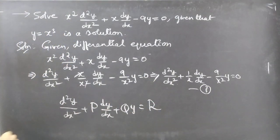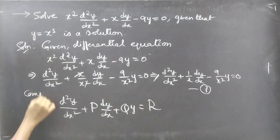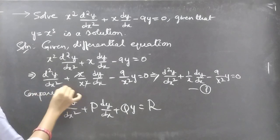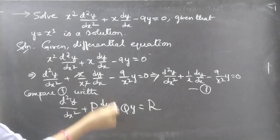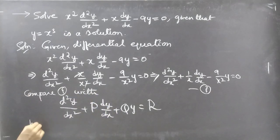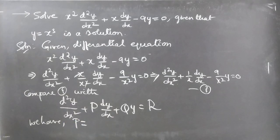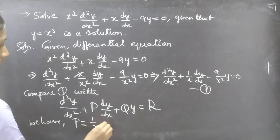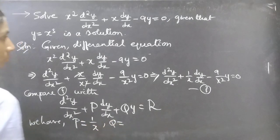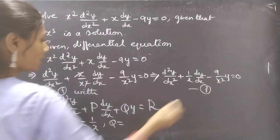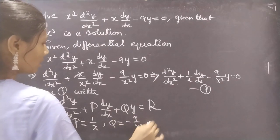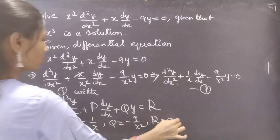Comparing equation 1 with the standard form, we have P = 1/x, Q = −9/x², and R = 0.